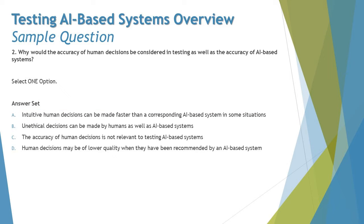Moving on to the next question: why would the accuracy of human decisions be considered in testing, as well as the accuracy of an AI-based system? This is a trendy question — you need to evaluate the options to get the right answer. Option A says intuitive human decisions can be made faster than corresponding AI-based systems in some situations. Speed of decision-making is not related to accuracy.